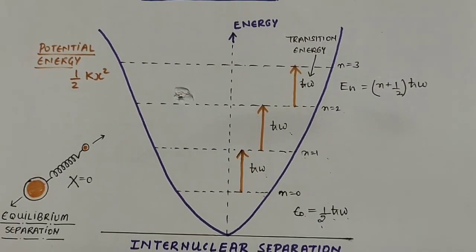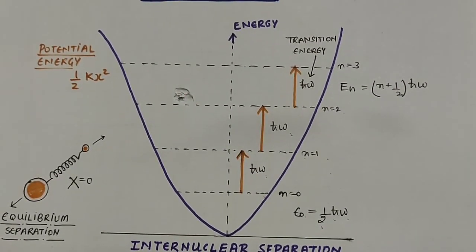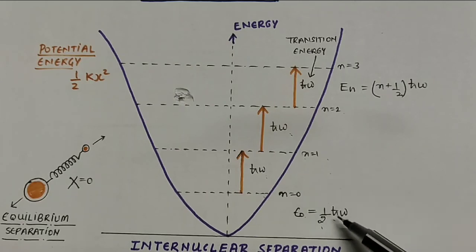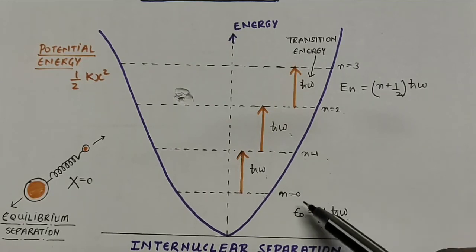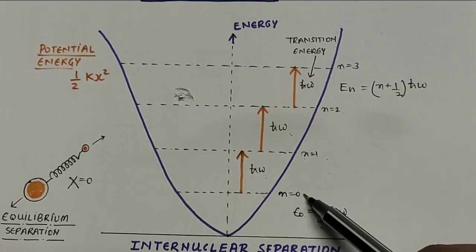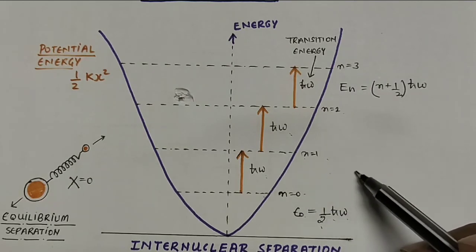From the graph of the harmonic oscillator, we see that the internuclear separation and the energy increase from each value of n by ½ħω.